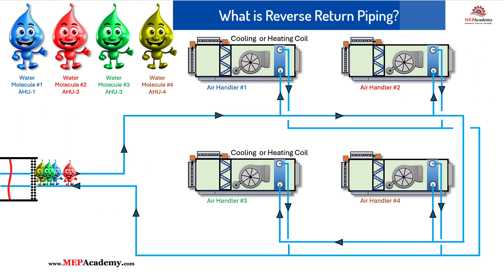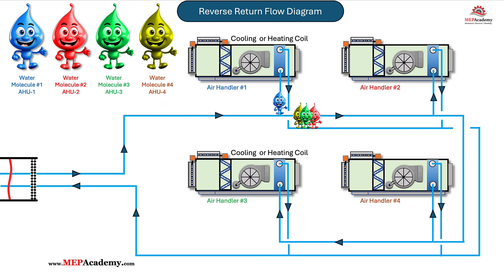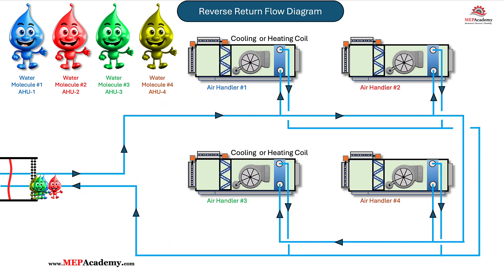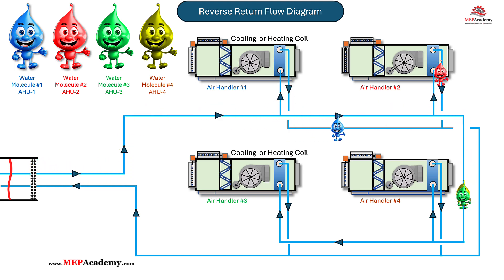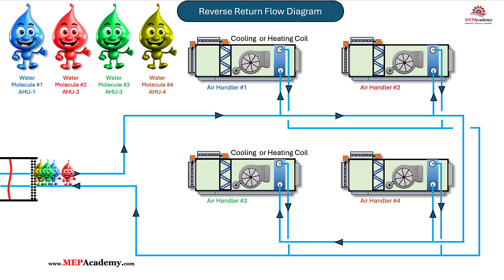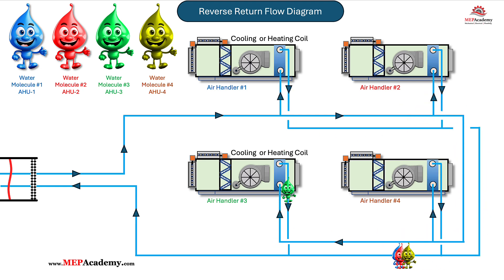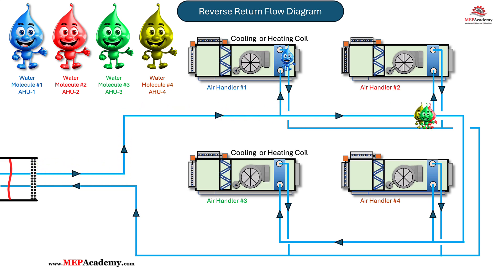What is reverse return piping? In a reverse return piping system, water flows to each terminal unit via the shortest path but returns along the longest path. Essentially, the return pipework is designed so that the last unit on the supply line is the first to return to the source. This approach results in equalized pipe lengths for each terminal unit, which is one of the defining characteristics of reverse return piping.